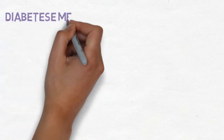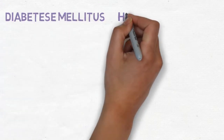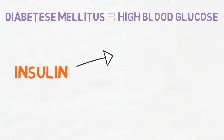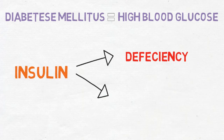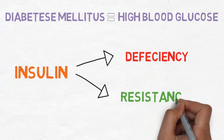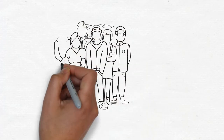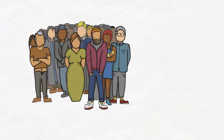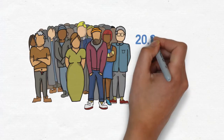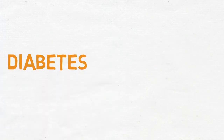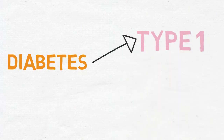Diabetes mellitus is a group of diseases characterized by high levels of blood glucose resulting from defects in insulin production, insulin action, or both. 20.8 million people are diagnosed with diabetes in the US, which represents 7% of the population. Diabetes consists of two types.